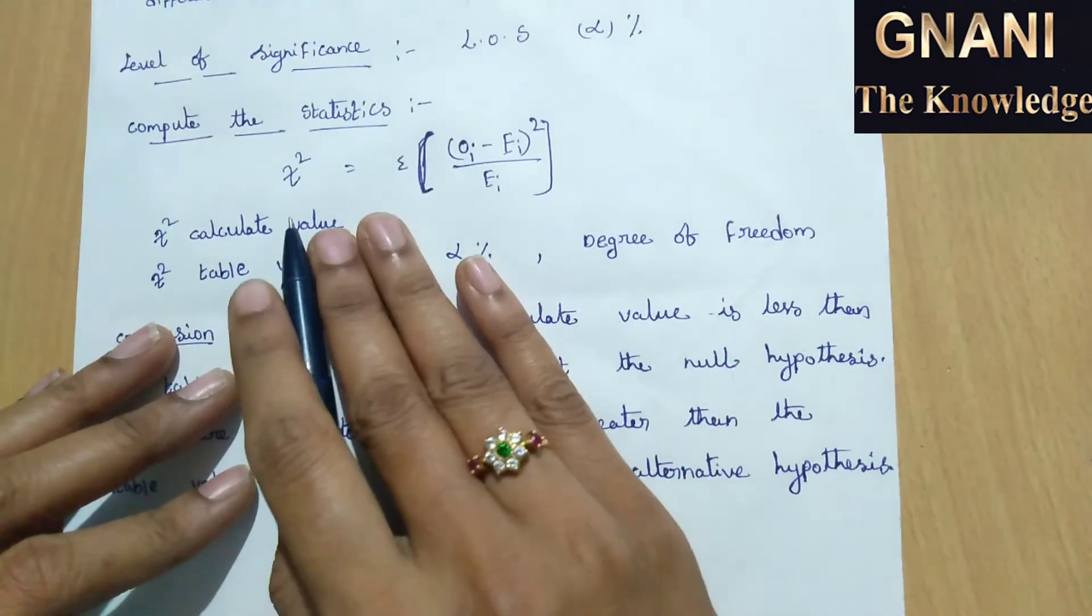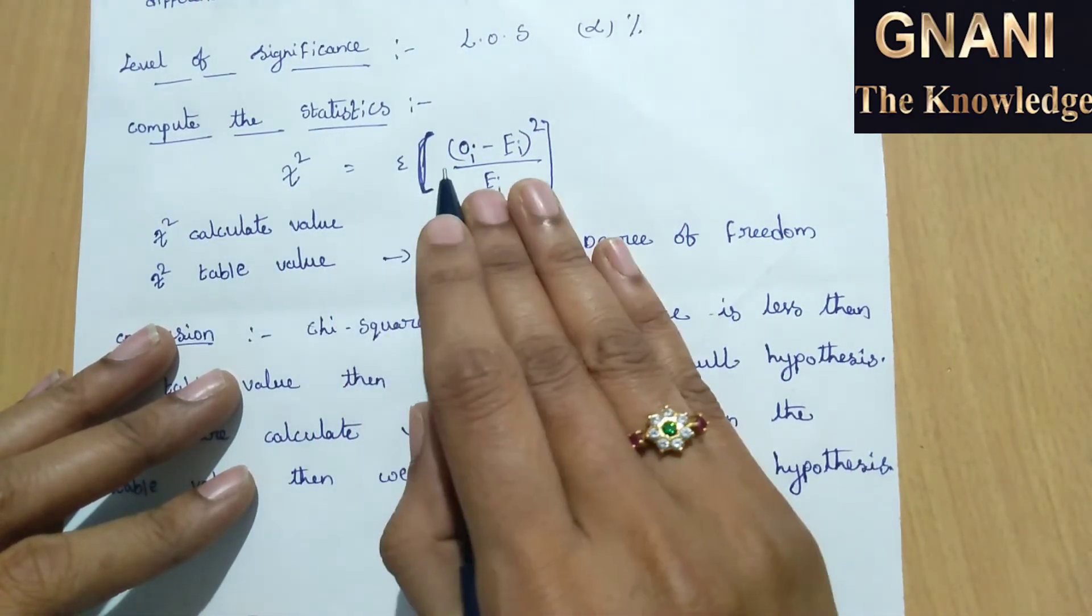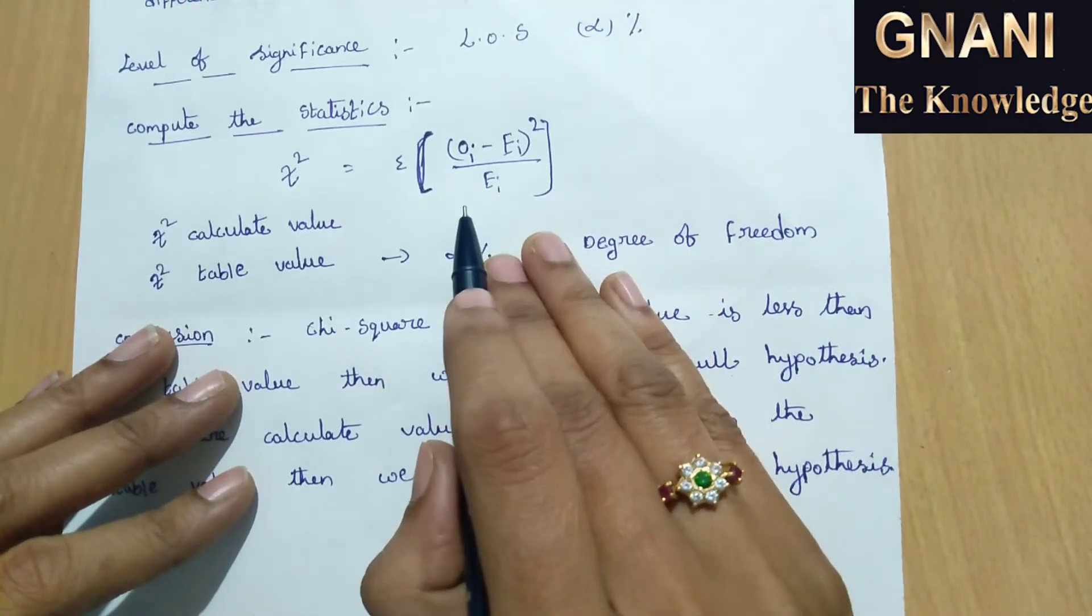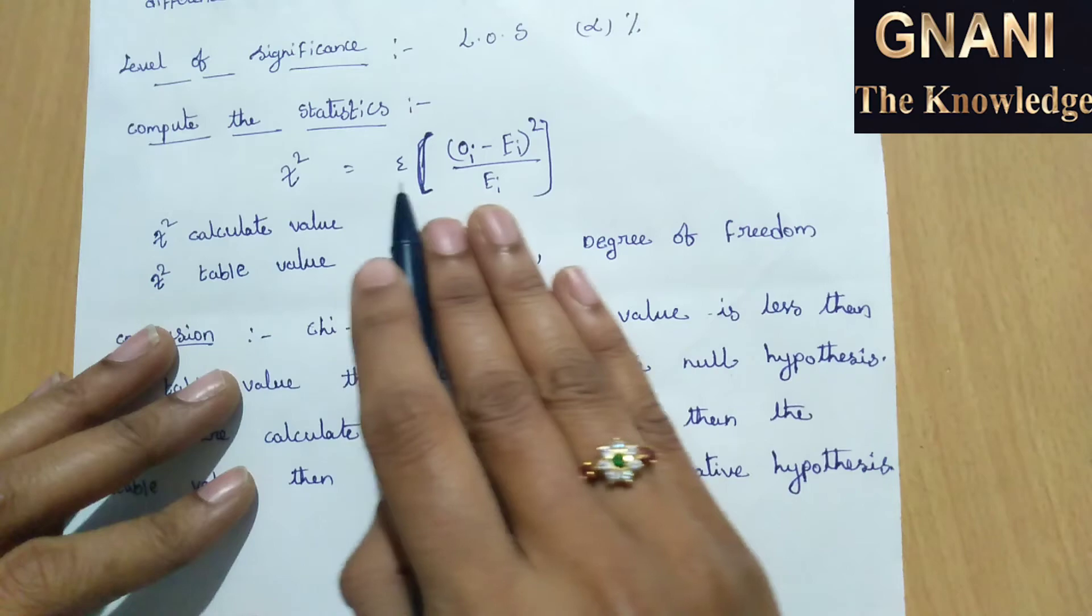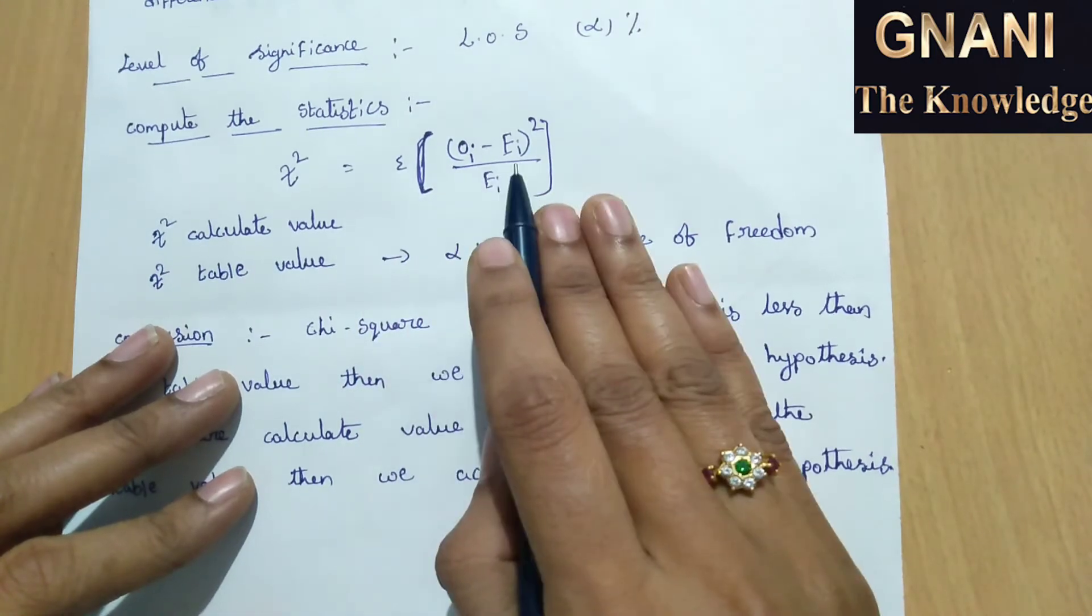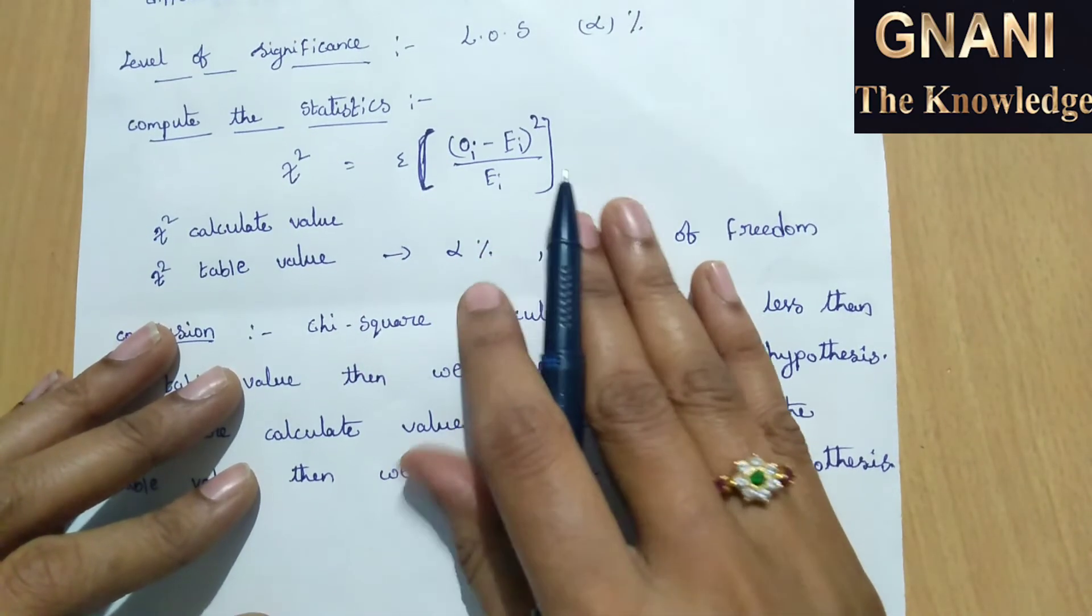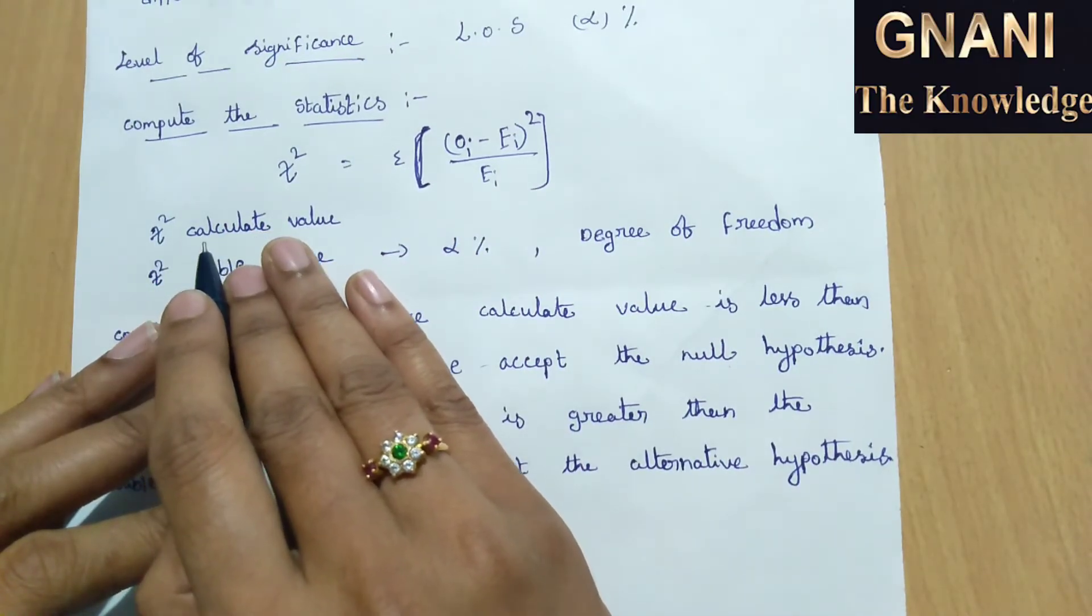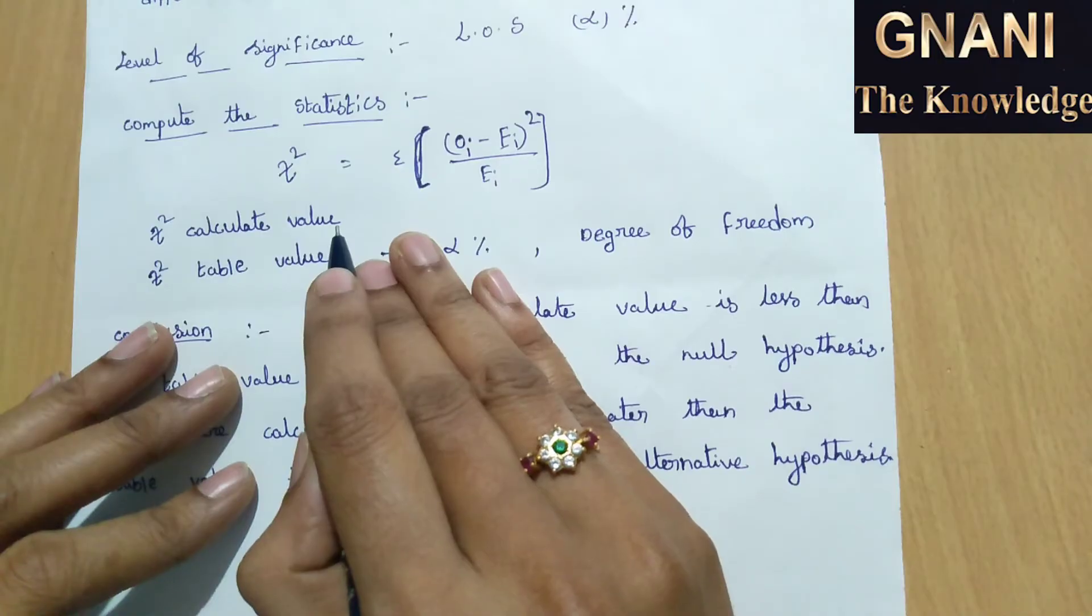What is the chi-square formula? Chi-square equals summation OI minus EI whole square by EI. So I will repeat once again. Chi-square equals summation OI minus EI whole square by EI. So after that we have to calculate the chi-square calculate value.